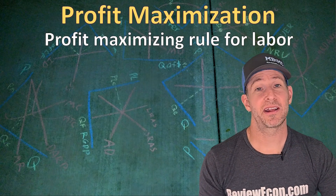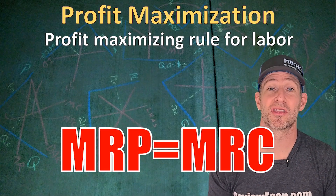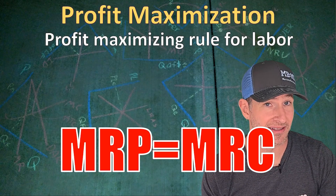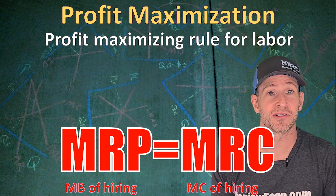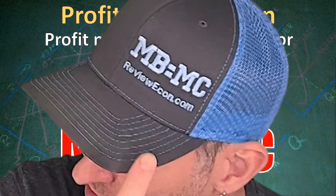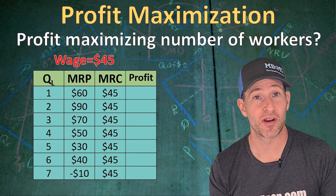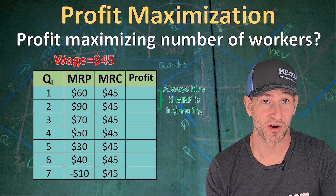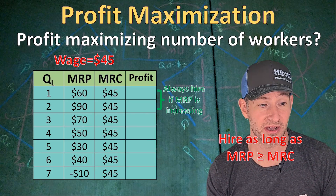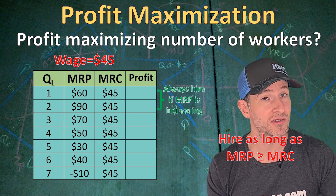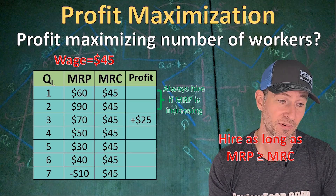When it comes to the profit-maximizing quantity of labor a firm will hire, we have a rule: the firm hires the quantity of labor where the marginal revenue product equals the marginal resource cost. This is an application of marginal analysis — the marginal revenue product is the marginal benefit of hiring more workers, and the marginal resource cost is the marginal cost. Benefit-maximizing behavior is where marginal benefit equals marginal cost. So let's figure out how many workers this firm will hire. The wage is $45, giving us a marginal resource cost of $45. The firm will always hire those first few workers where the marginal revenue product is increasing, then hire as long as MRP is greater than or equal to MRC. That third worker has an MRP of $70 and an MRC of $45 — hiring that worker increases profit by $25.